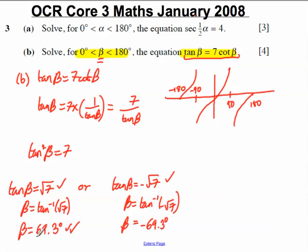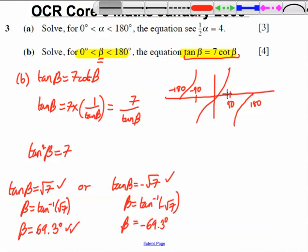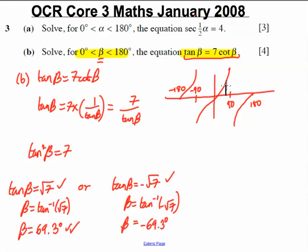Okay, firstly when beta equals 63.9, let's draw that in with a line. Sorry, 69.3, somewhere here. If we found what other values that matches on the tan graph, we would see it matches here, but nowhere else in the range 0 to 180.